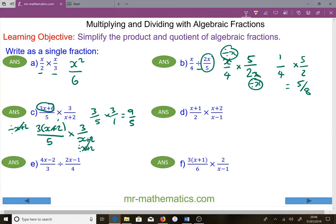For question d, we can't cross simplify here because there are no common factors. So we have x plus 1 multiplied by x plus 2 over 2 lots of x minus 1. If we wanted to, we could expand these brackets out, but we don't need to.